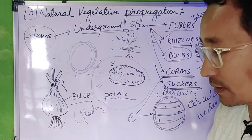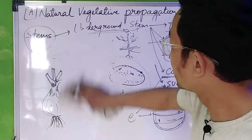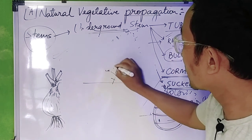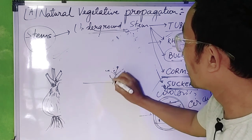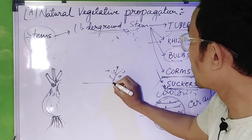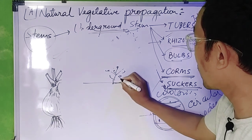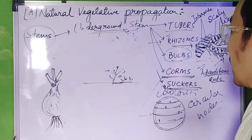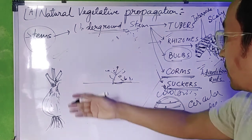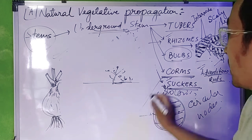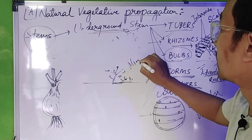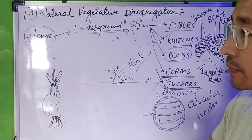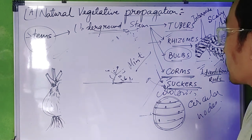If you have a stolon, for example mint — so work with that you will find it. Otherwise, the surface runners grow over the surface area.